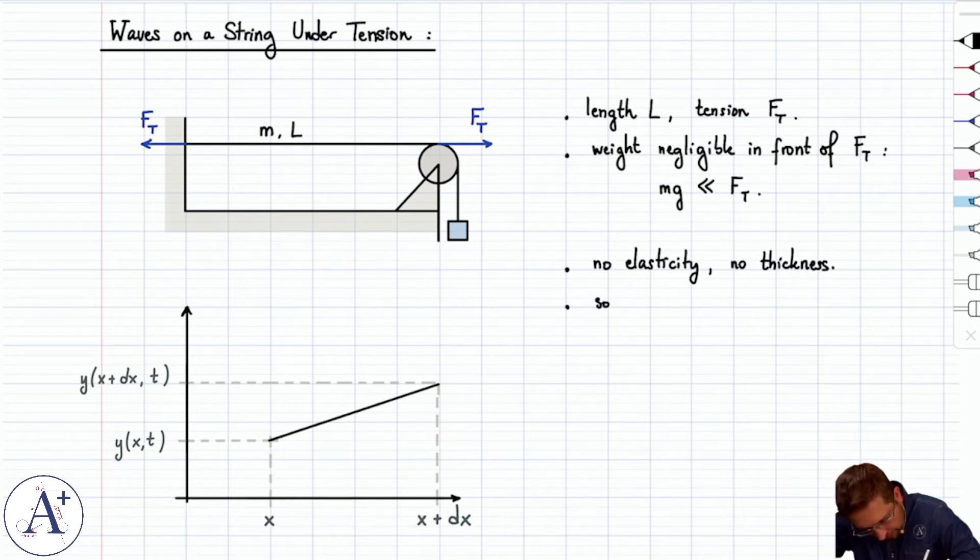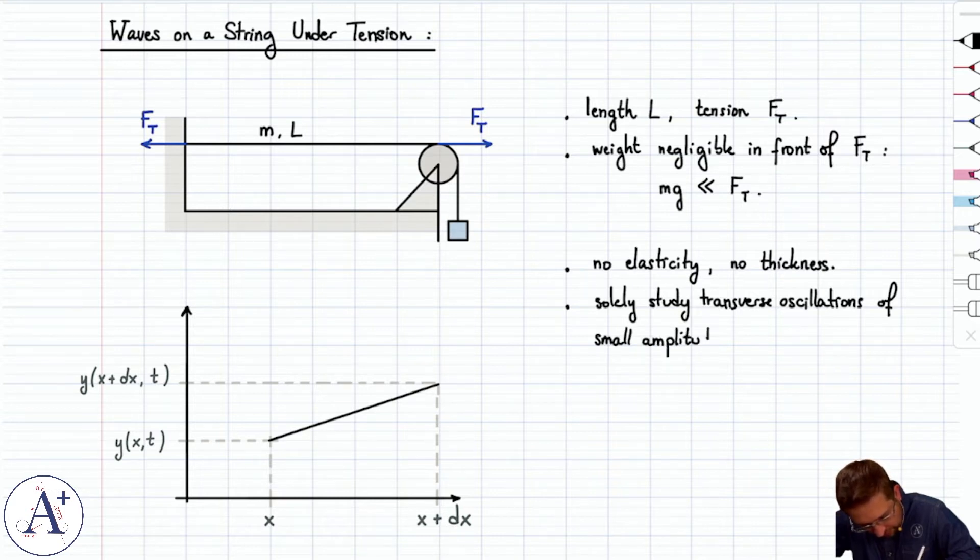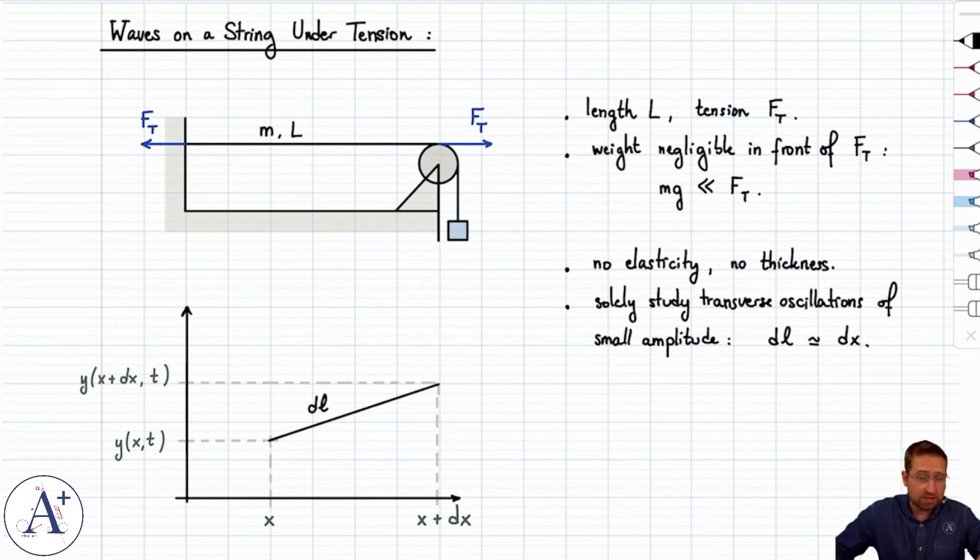Third item is that the string has no elasticity and no thickness. And then finally, we solely study transverse oscillations of small amplitude. So that would be oscillations in the y-direction only. And if the amplitude is small, then we'll have dL is approximately dx. Now dL stands for the little piece of wire, that's the infinitesimal length of that piece of wire, and dx is the width of this interval on the x-axis.